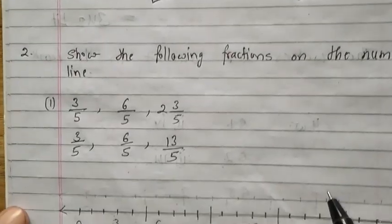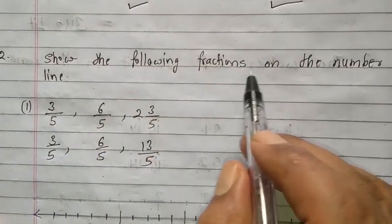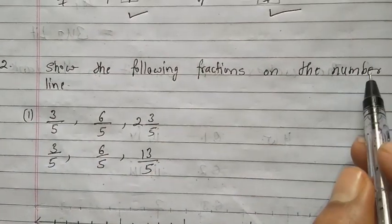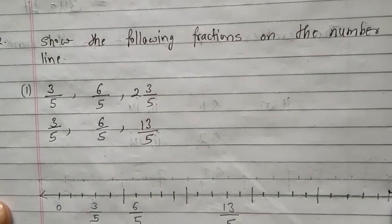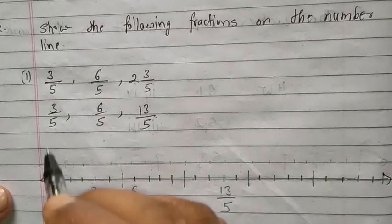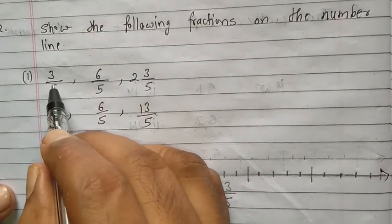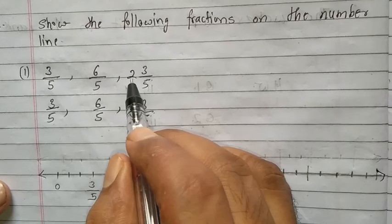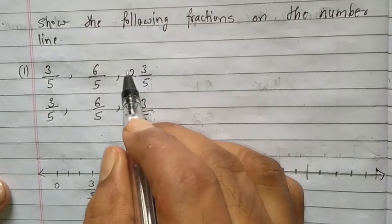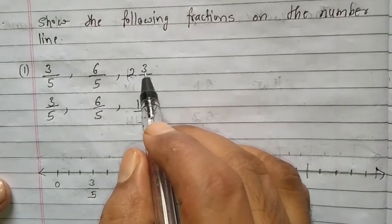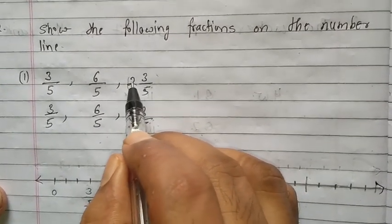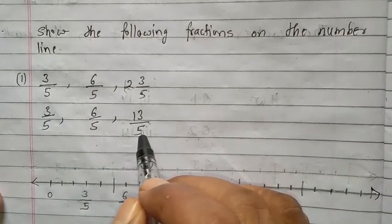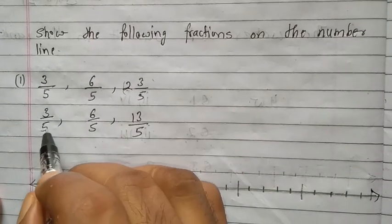Now come to question number 2. What is given here? Show the following fractions on the number line. We have to make one number line. What is given? 3 upon 5, 6 upon 5, and this mixed fraction — convert it into a proper fraction: 5 twos are 10, 10 plus 3 is 13 upon 5.